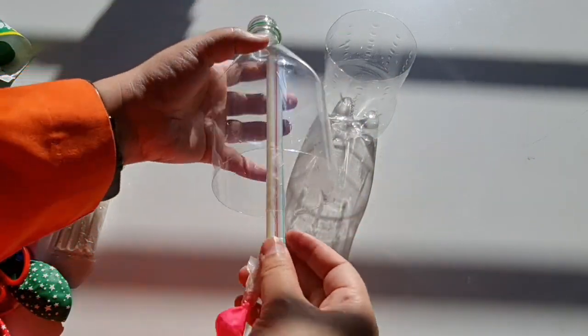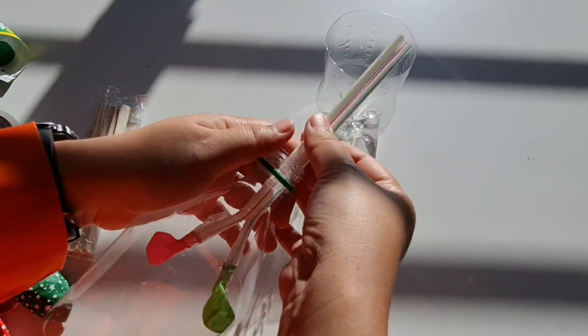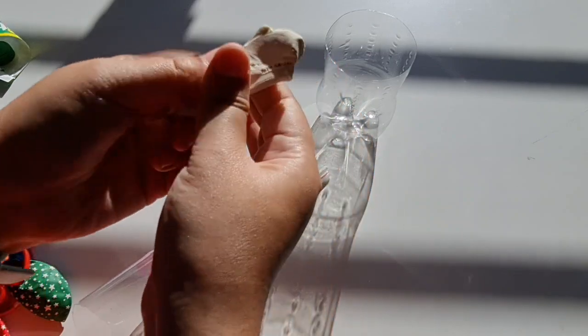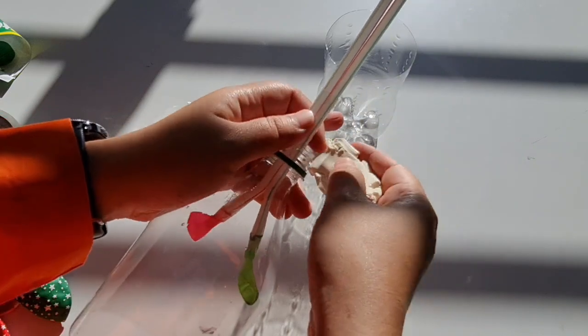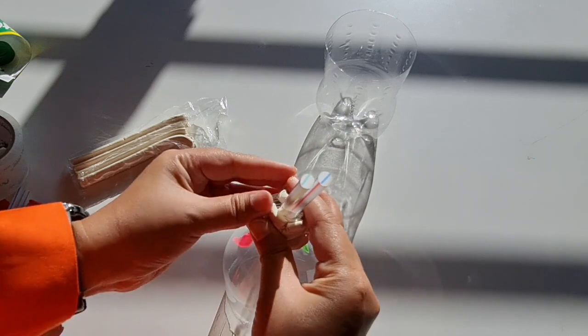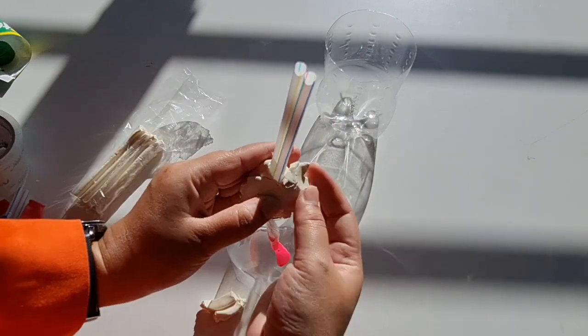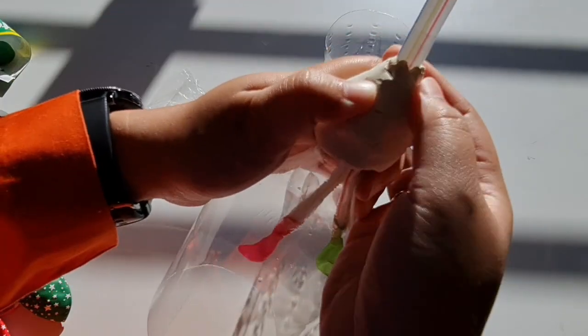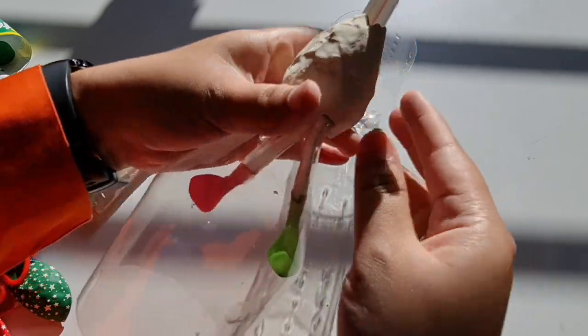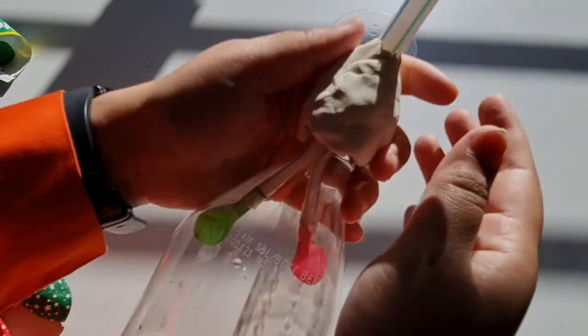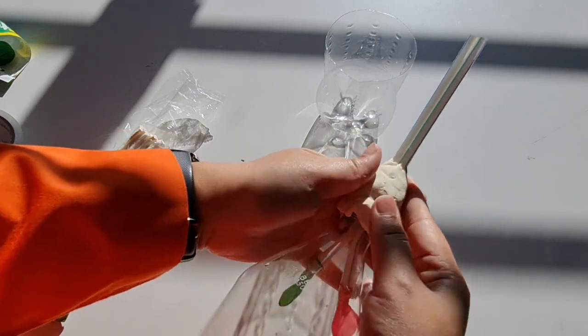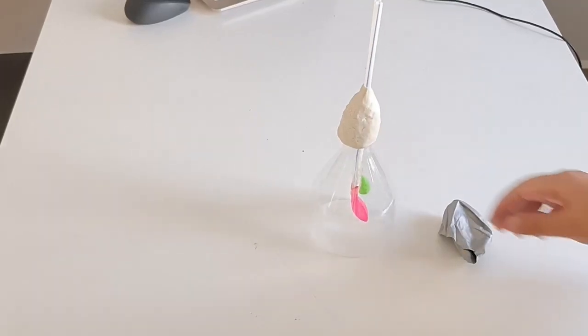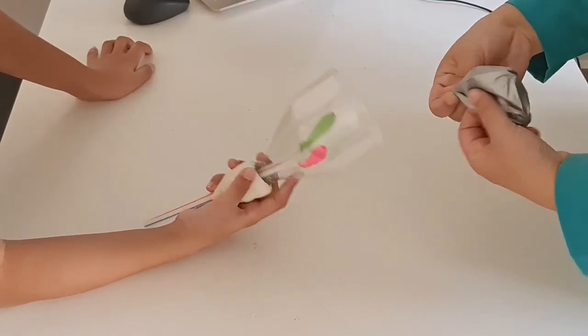And then we are going to insert this into the bottle. And we take some plasticine or modeling clay. And then we are going to attach the balloon at the bottom of the bottle.